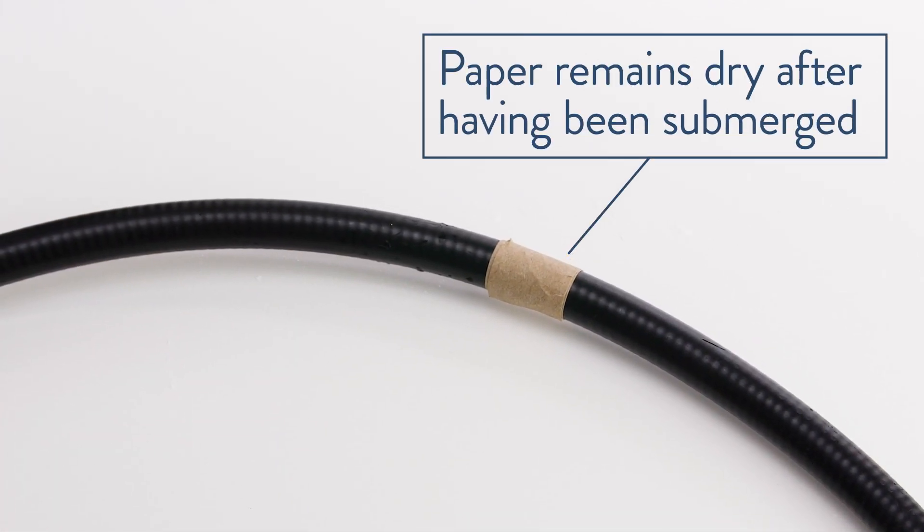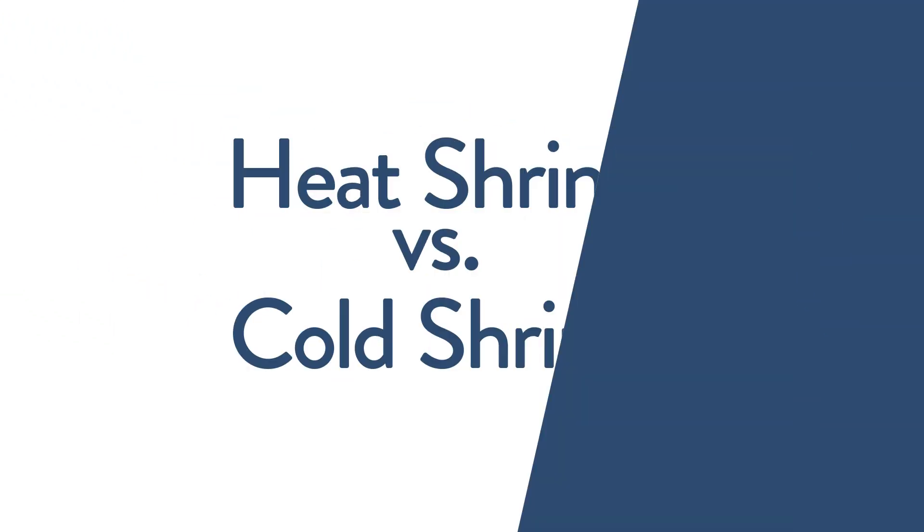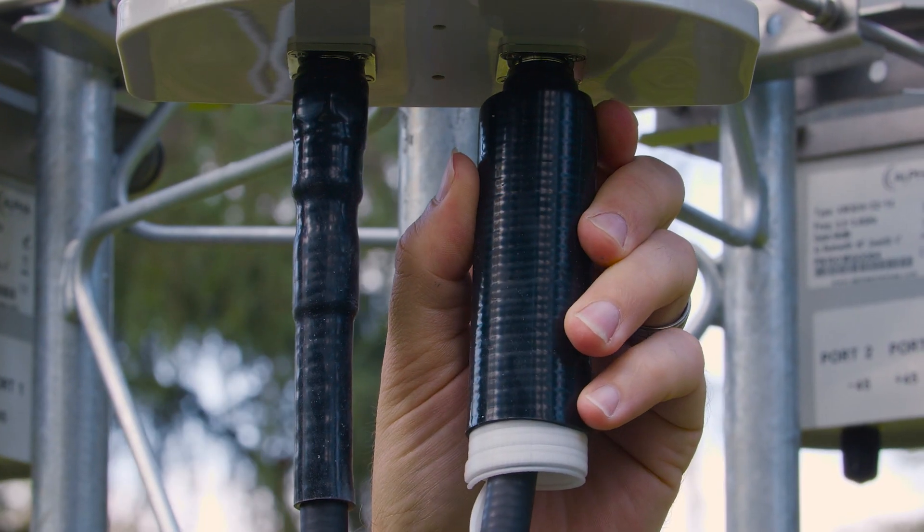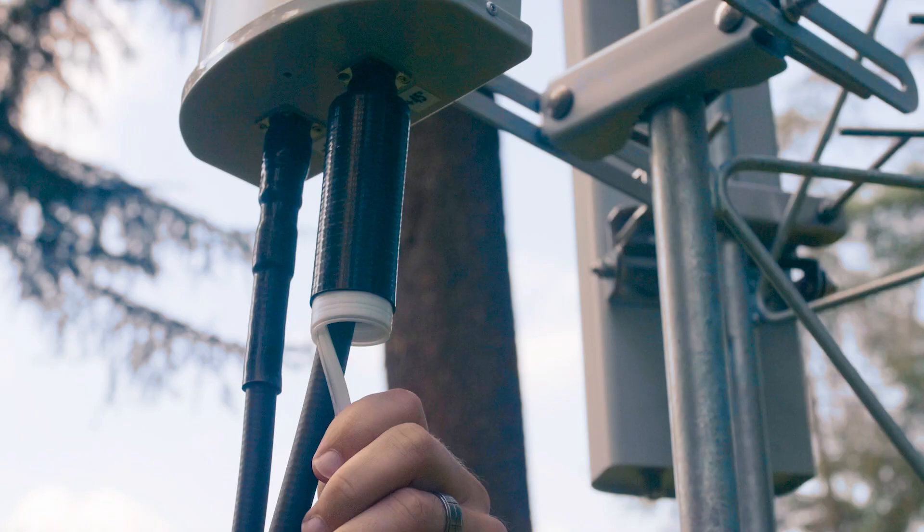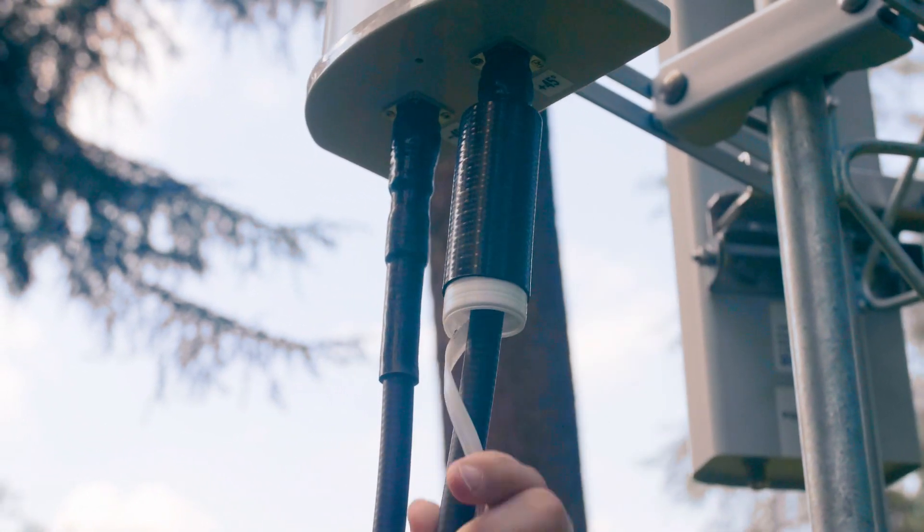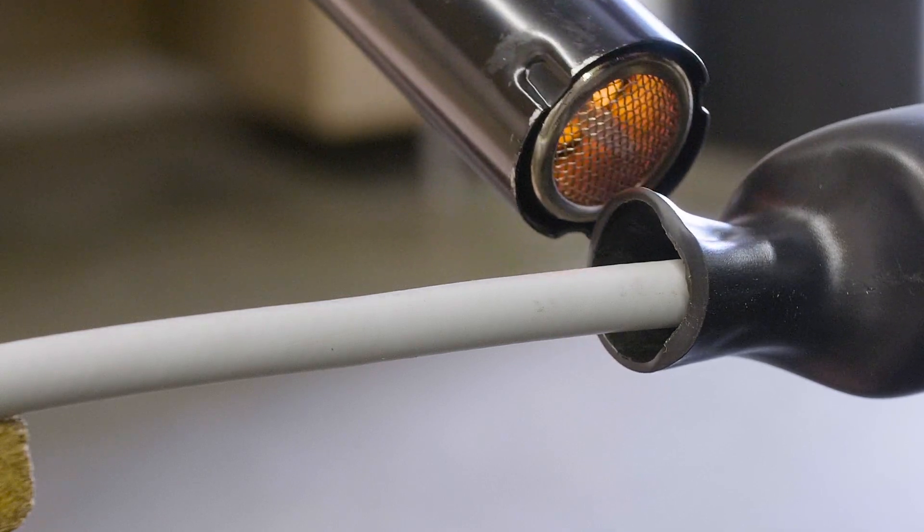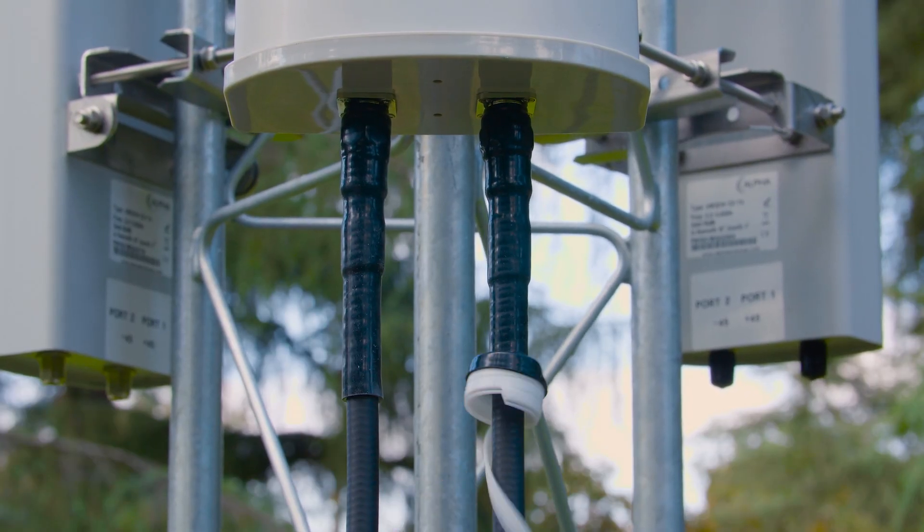Both types of cable protection have their benefits. Heat shrink can be used on smaller cables and connectors than Cold Shrink. Cold Shrink, however, is much easier to install, especially in more difficult install locations like towers. While heat shrink requires a heat gun or torch to install, Cold Shrink requires no tools at all.